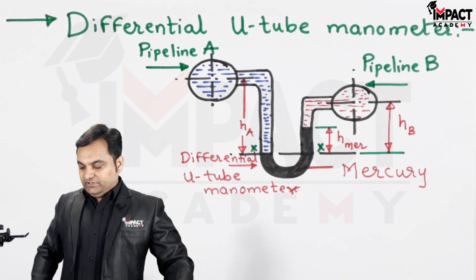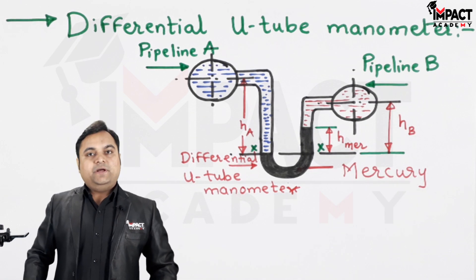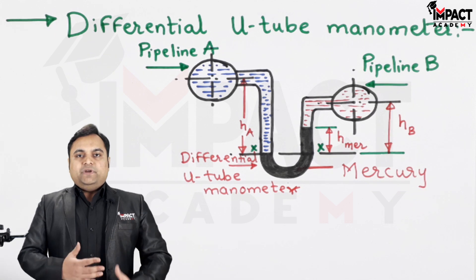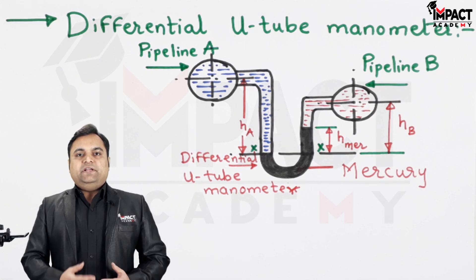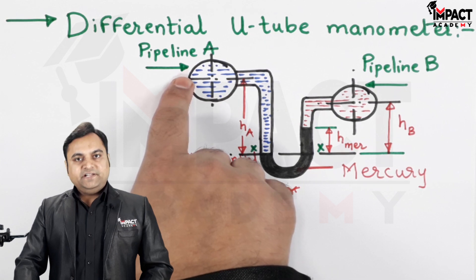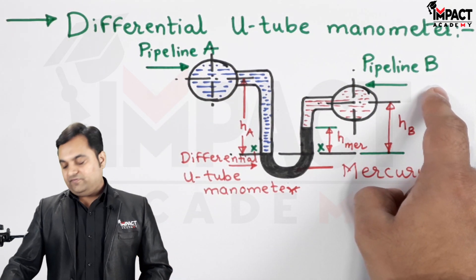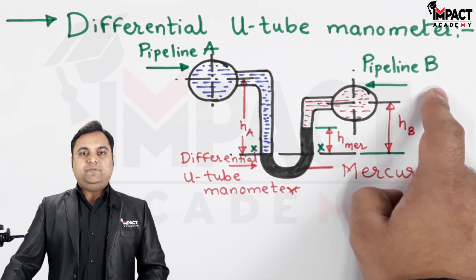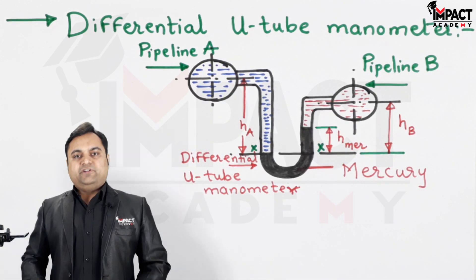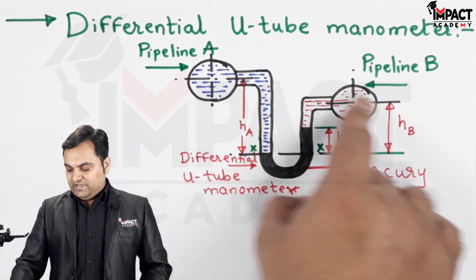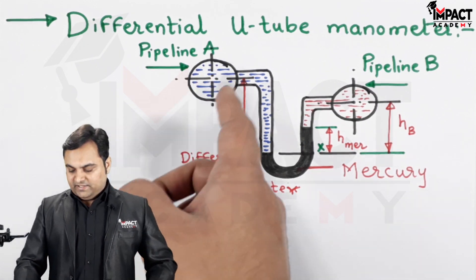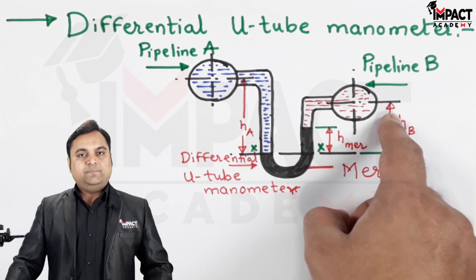Here is the differential U-tube manometer. It is used to measure the pressure difference in two pipelines. Here I have indicated pipeline A and here we have pipeline B. We can see that there is a level difference between pipe A and pipe B — the left pipe or pipeline A is above pipeline B.